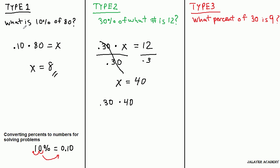So what is 30% of 40? So we would do 0.3 times 40, and we would get 12.